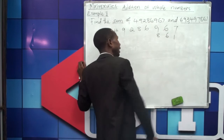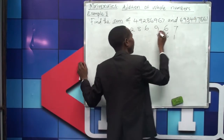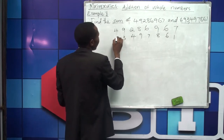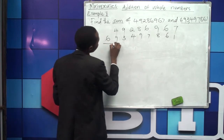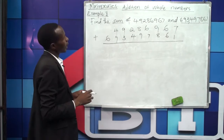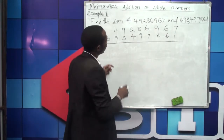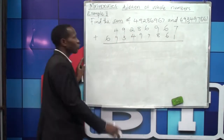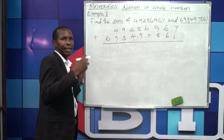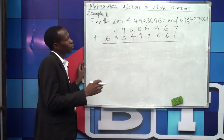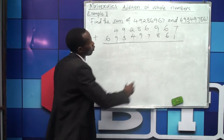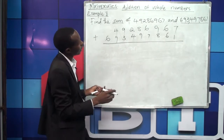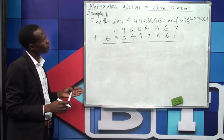We always begin from the ones side on the second number. Any second, third, or fourth number should be aligned beginning from ones, then tens, hundreds, gradually until you finish all the digits. So we are going to add starting from the place value of ones.